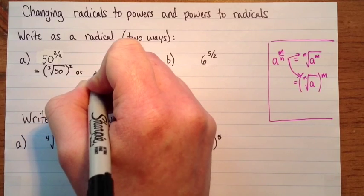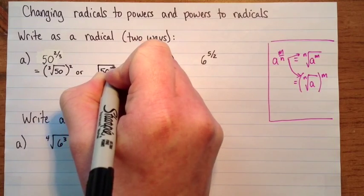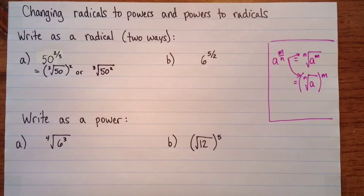Or, I can do fifty squared first, and then take a cube root of it. Okay, these are both correct, and they're both useful.